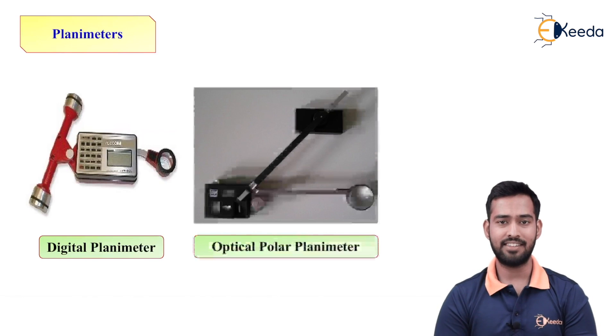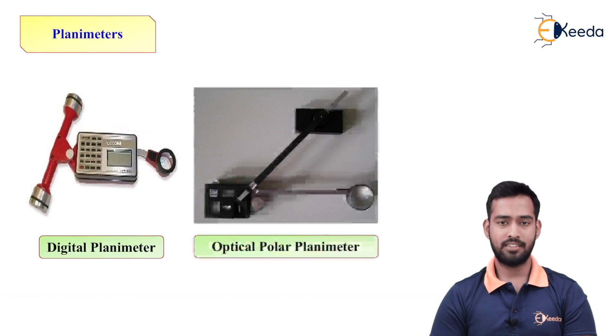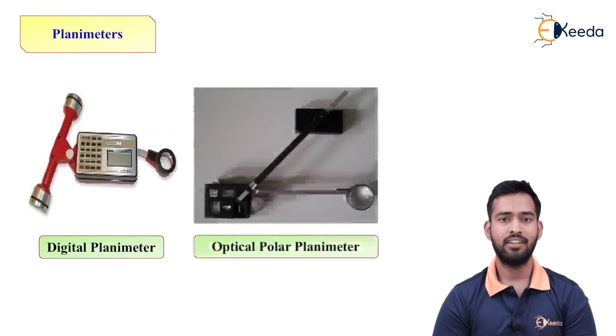Whereas, in second figure, as we can see, it is optical polar planimeter. It is also known as mechanical planimeter. In this planimeter, as we can see, there is no digital display. So we have to calculate sub-reading. By using these readings, we have to apply a formula to get the area of that particular figure. So there are two types of planimeters.